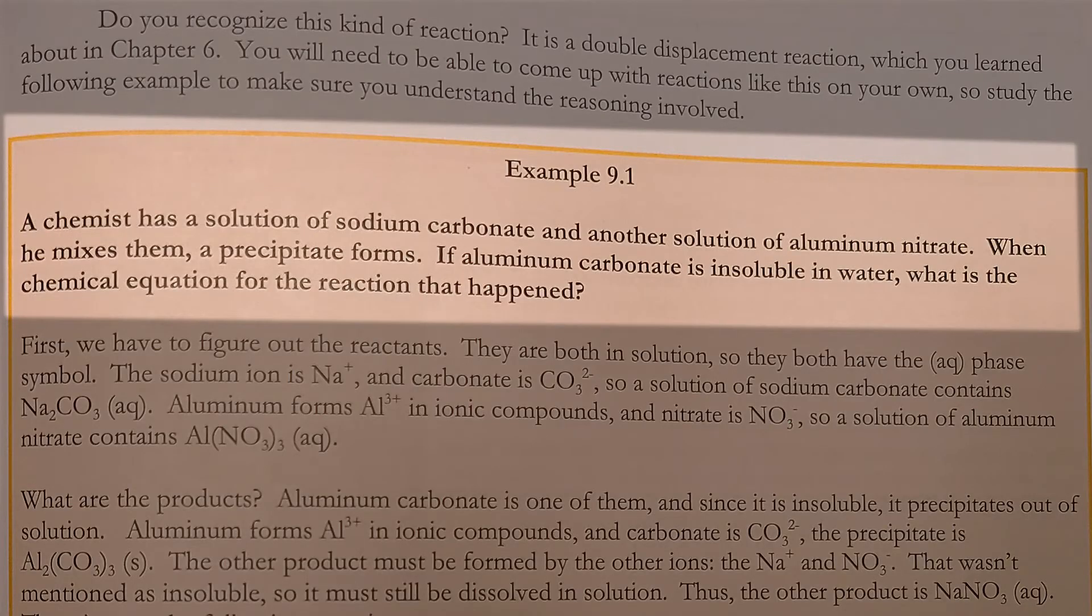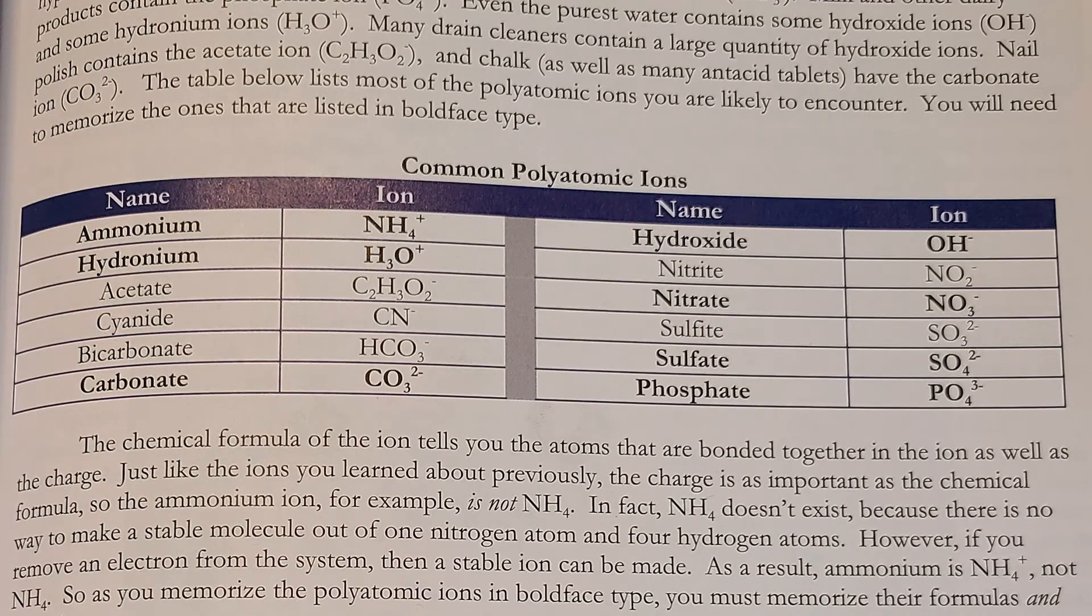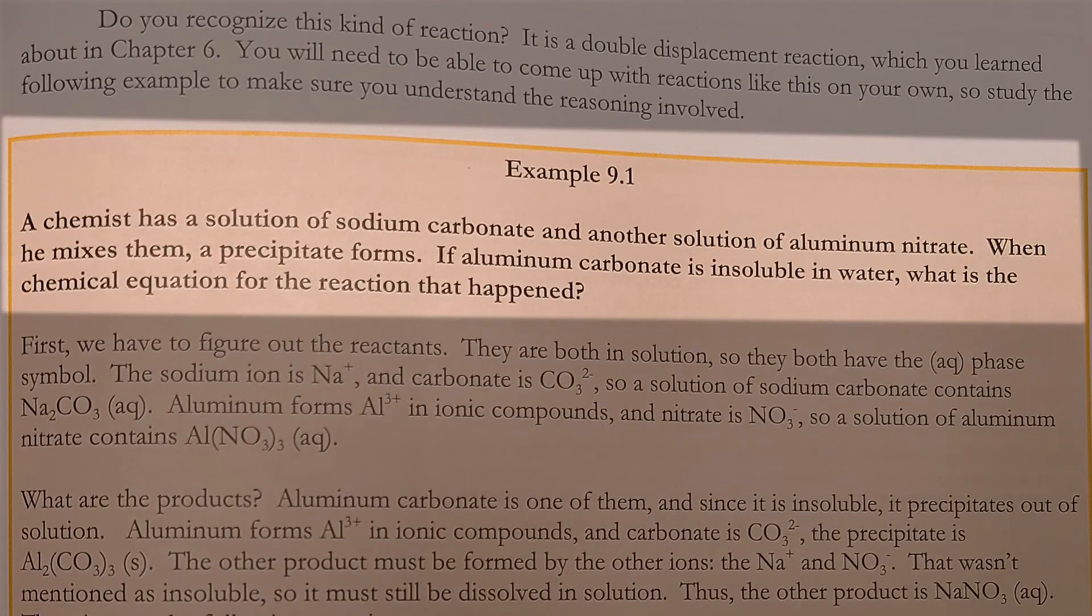Let's work through another example - example 9.1 from page 265 in our book. We'll need to refer to our chart of polyatomic ions on page 245. Example 9.1 says: a chemist has a solution of sodium carbonate and another solution of aluminum nitrate. When he mixes them, a precipitate forms. If aluminum carbonate is insoluble in water, that means it's our solid - aluminum carbonate is the precipitate. What is the chemical equation for this reaction?